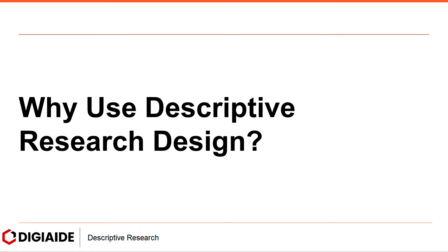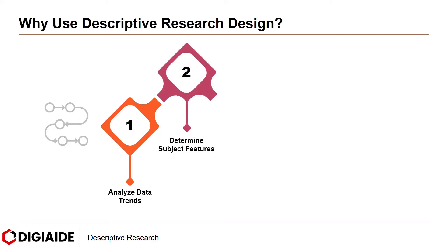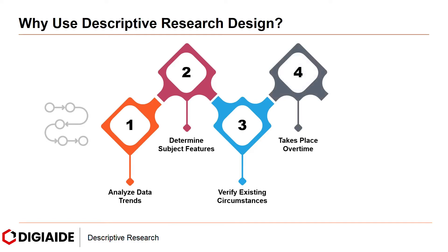Why use descriptive research design? First, it analyzes data trends. Second, it determines the subject features of who is being studied. Third, it verifies existing circumstances where the event takes place. Fourth, it takes place over time. And finally, there is some sort of differentiation and comparison that can be done.